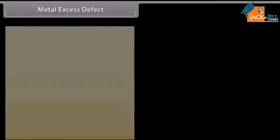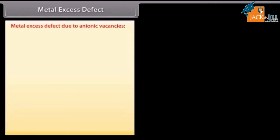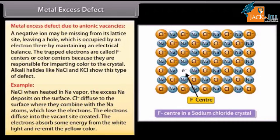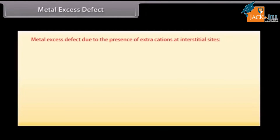Metal excess defect due to anionic vacancies: A negative ion may be missing from its lattice site, leaving a hole which is occupied by an electron, thereby maintaining electrical balance. The trapped electrons are called F-centers or color centers because they are responsible for imparting color to the crystal. Alkali halides like NaCl and KCl show this type of defect. For example, when NaCl is heated in Na vapor, excess Na deposits on the surface. Cl⁻ ions diffuse to the surface where they combine with Na atoms, which lose electrons. The electrons diffuse into the vacant sites created.